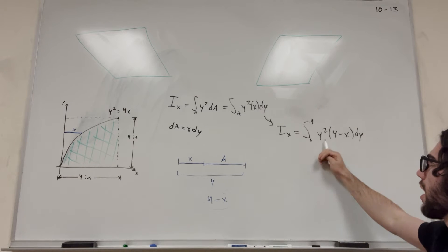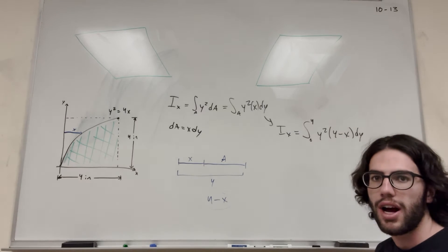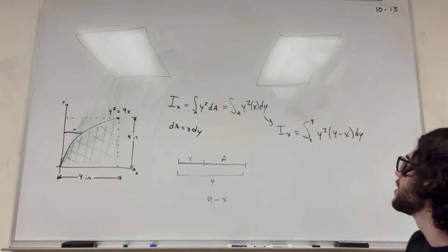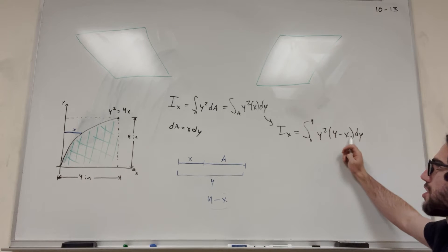So now we have an integral, but we have y and x in our integral. We don't want y and x, so we need to get rid of one of them. Since we already have this dy here, let's try to get rid of this x.